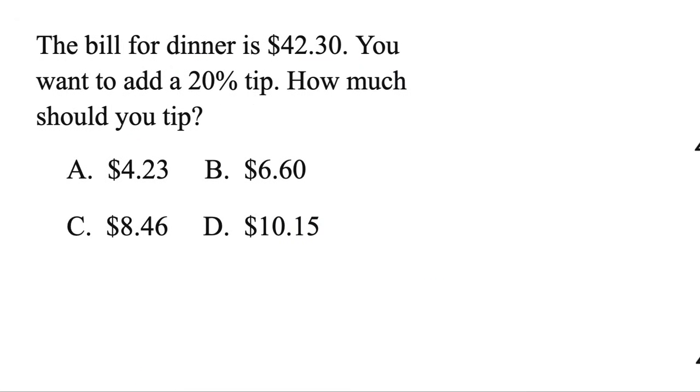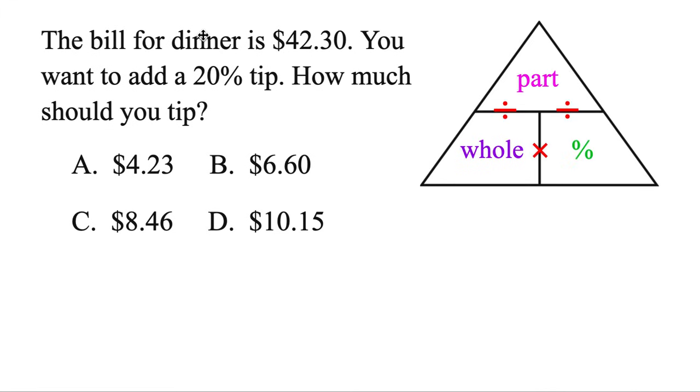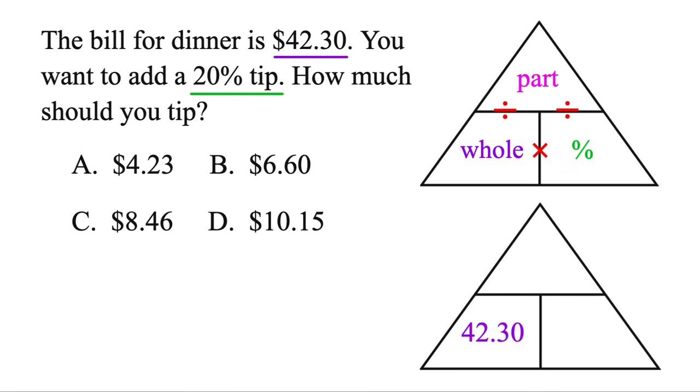Okay, another style you could see. This time we have a percent, so you could automatically draw your triangle. The bill for dinner is $42.30. You then want to add a 20% tip. How much should you tip? Well, let's draw our triangle, and you know what to do. You got your $42.30, that's the total. Same thing as the whole, so we'll put it bottom left.